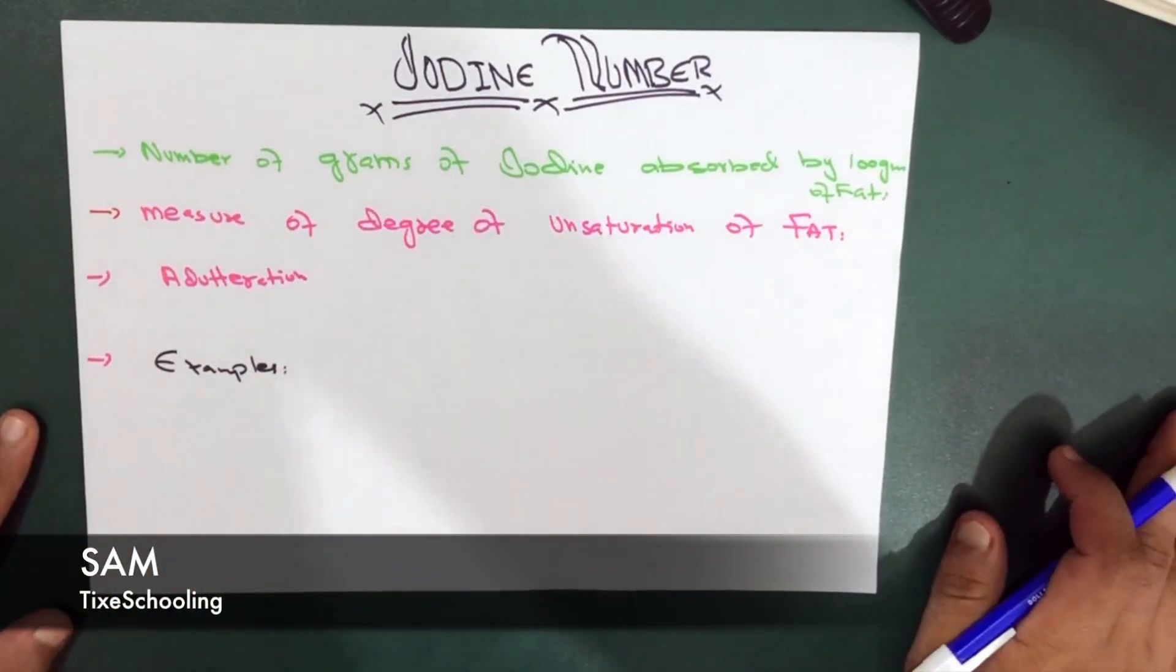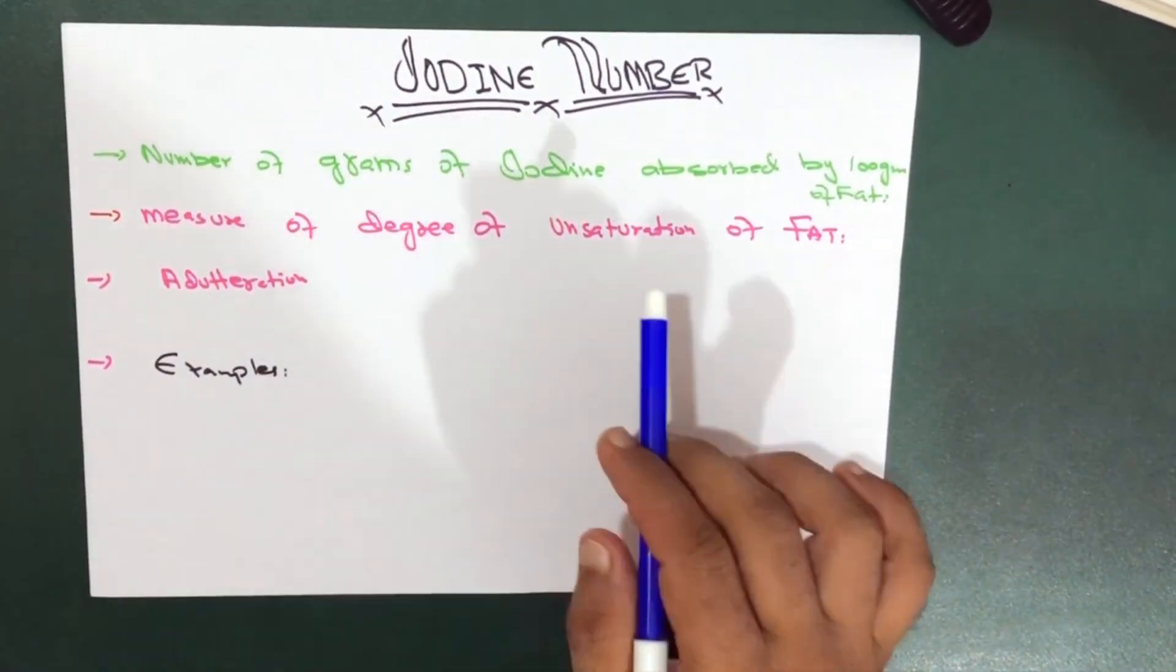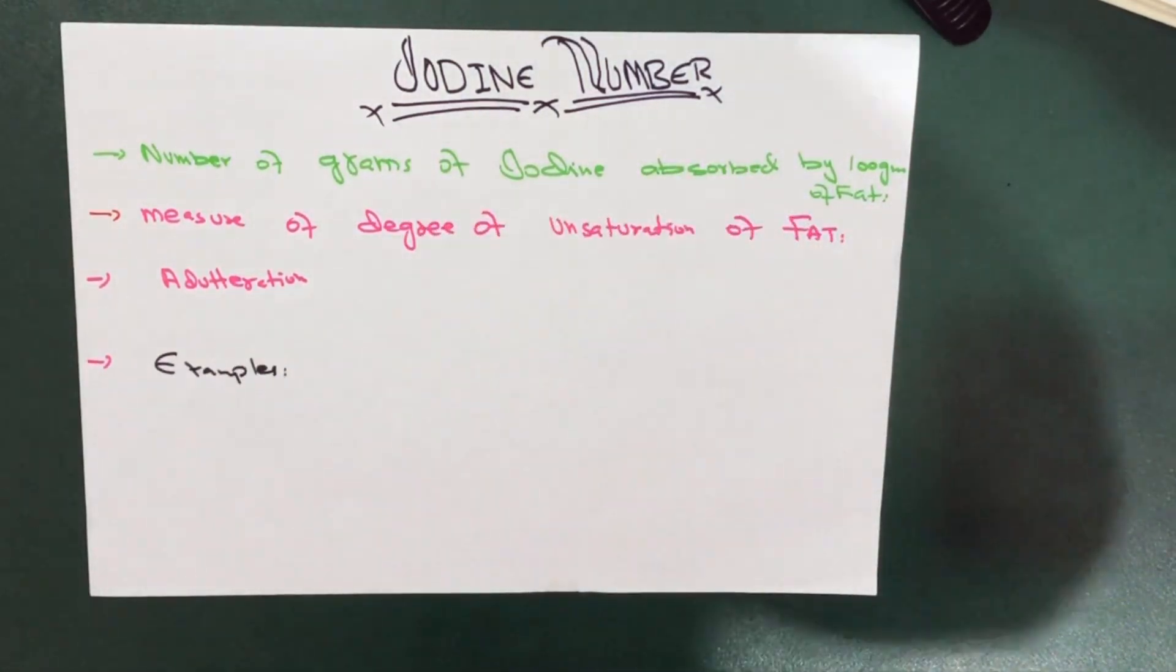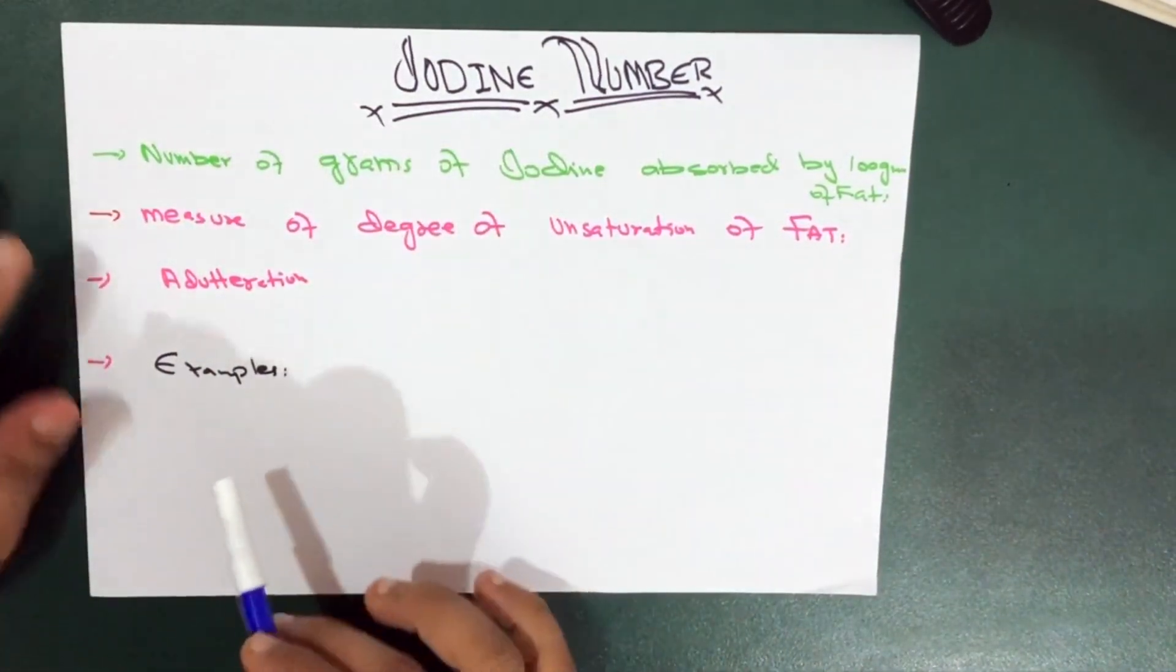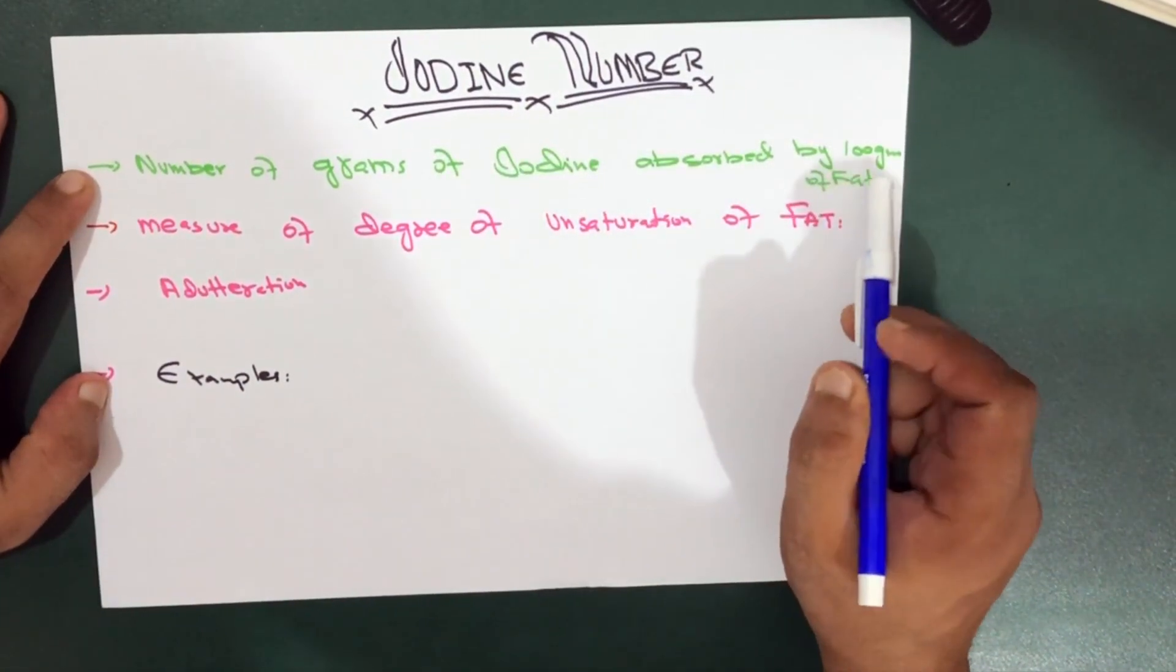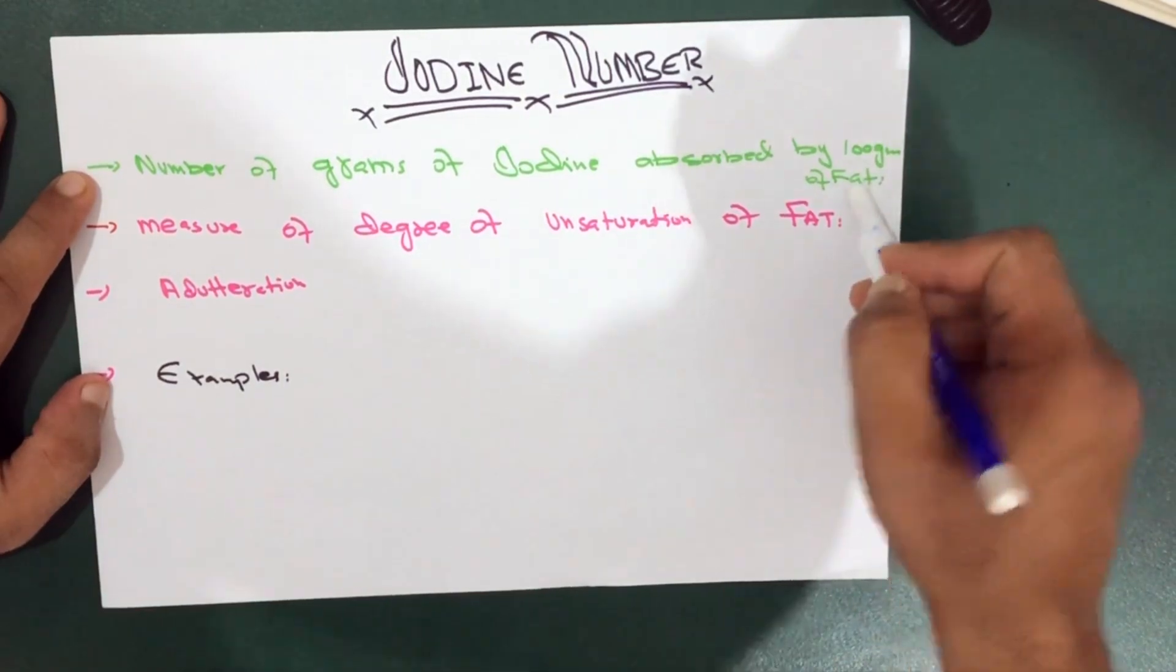Hello YouTube, this is Sam from Tykes is Calling. In this video we're going to talk about the iodine number. So what is iodine number? Iodine number is the number of grams of iodine absorbed by 100 grams of fat.